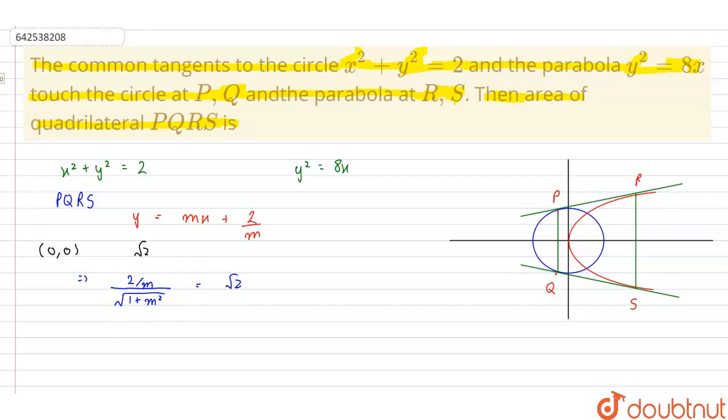Now cross multiplying and squaring we get 4/m² = 2(m² + 1). So this gives us m²(m² + 1) = 2.